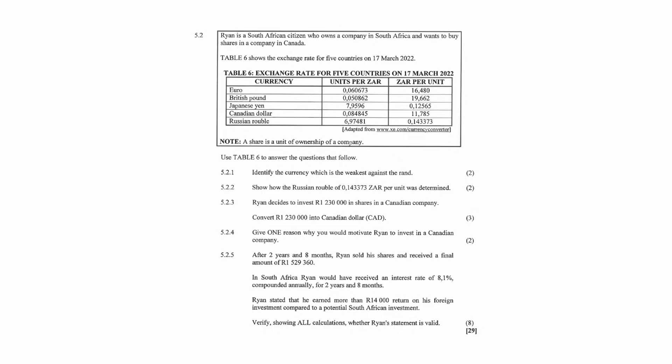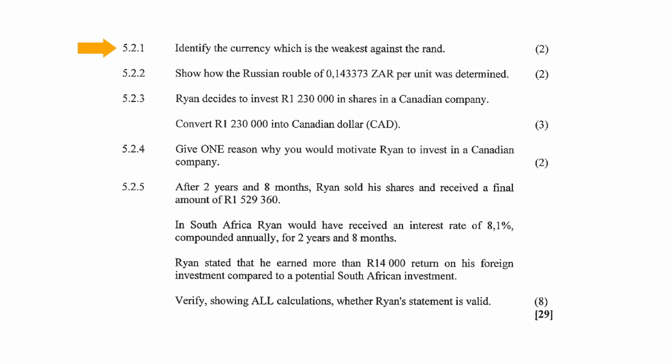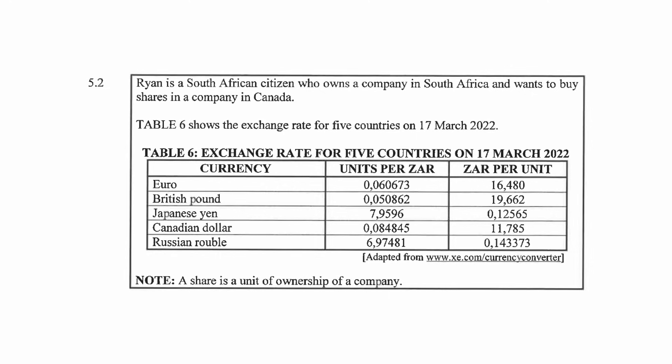Question 5.2 consists of four finance questions and one data handling question designed to assess your understanding of exchange rates. Ryan is a South African citizen who wants to buy shares in a Canadian company. Table 6 shows exchange rates for five countries on 17 March 2022: the Euro, British pound, Japanese yen, Canadian dollar, and Russian ruble. In question 5.2.1, the currency weakest against the Rand is the Japanese yen, as it costs 7.9596 Japanese yen for 1 Rand, or 0.12565 Rand for 1 Japanese yen.